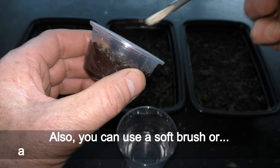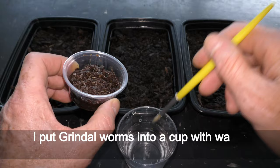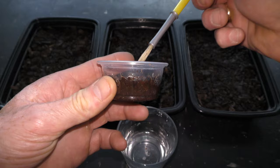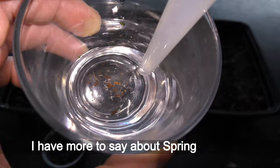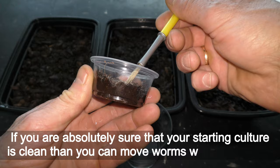Also, you can use a soft brush or a toothpick or such to pick worms from the soil. I put grindal worms into a cup with water to separate them from possible mites or springtails. Springtails and mites do not sink in water. I have more to say about springtails later.